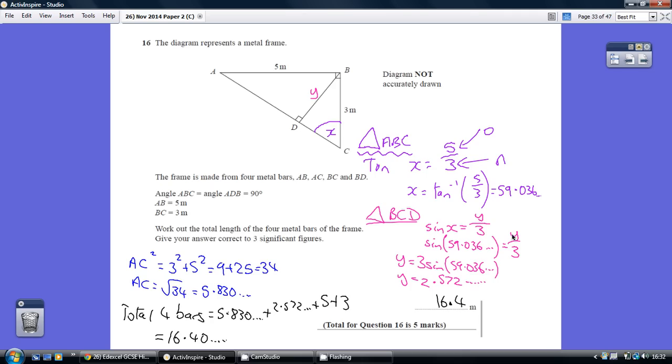So sine 59 is y over 3. Multiplying both sides by 3, we get y equals 3 lots of sine 59. Popping that into a calculator, we get a length of 2.572.